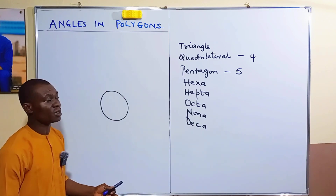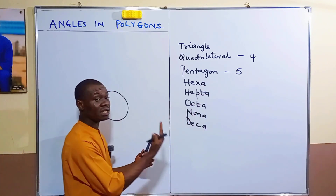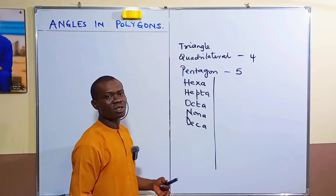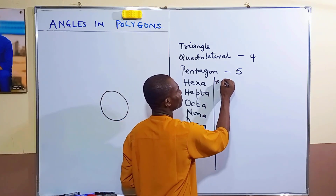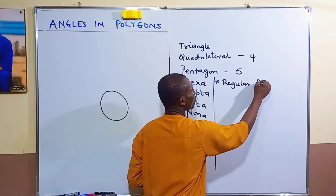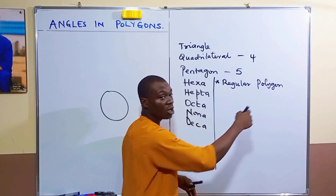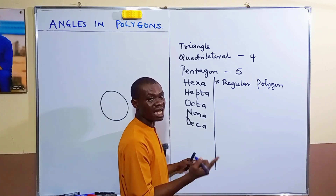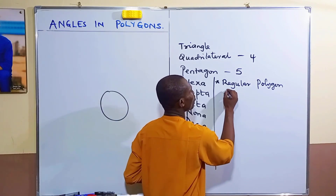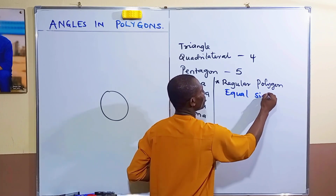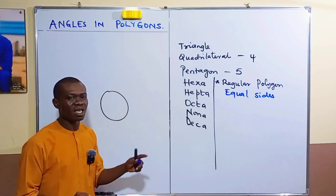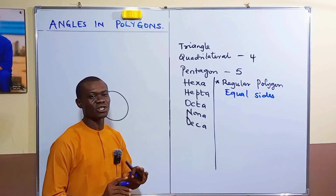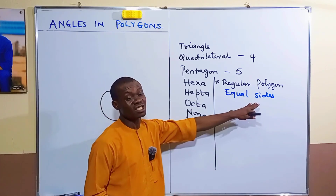Now, before we get into angles in polygons, we need to know the types of polygons. A regular polygon is a polygon that has equal sides and angles. Whenever any polygon has equal sides, automatically the angles will be equal, so even without mentioning angles, that definition is sufficient to define a regular polygon.